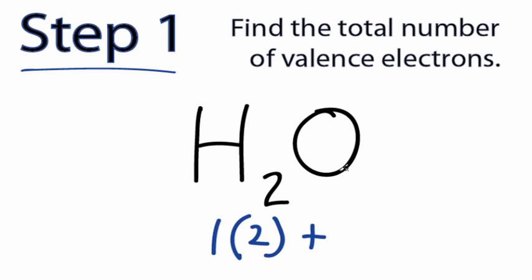Oxygen is in group 6, or 16. It has 6 valence electrons. And when we add that up, 2 plus 6, we get a total of 8 valence electrons for H2O. Remember, valence electrons are the outer shell electrons. They're the ones that form chemical bonds and interact with the world around them.